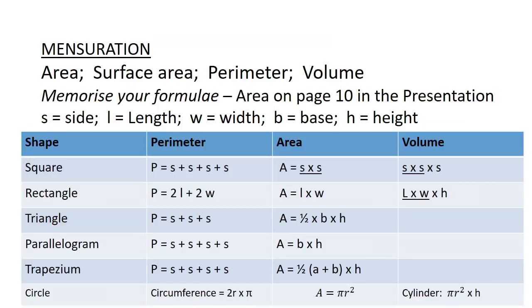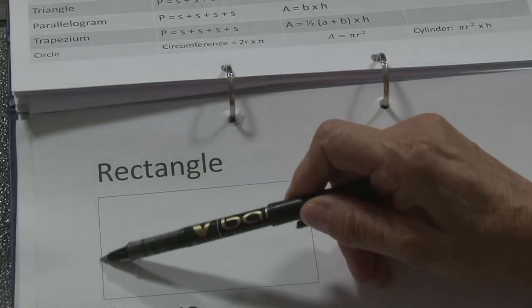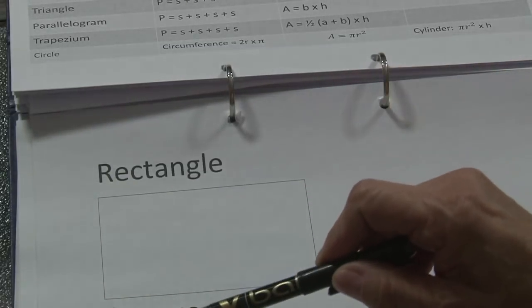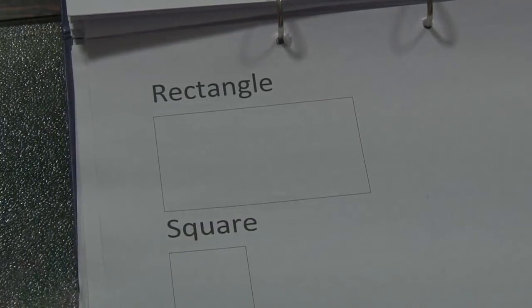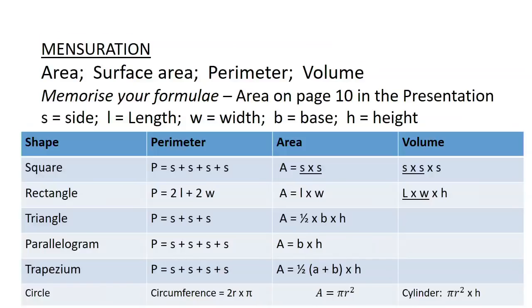The shapes are: square, rectangle, triangle, parallelogram, trapezium, and circle. Perimeter is the distance around a shape — it is only length. The perimeter of a rectangle is this side plus this side plus this side plus this side. For perimeter, you do not really need to learn your formula, because if you just add all sides you will get the answer — except for the circle. For the circle, the perimeter (called the circumference) is 2 times radius times pi, or diameter times pi.